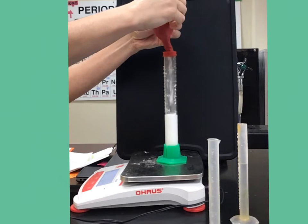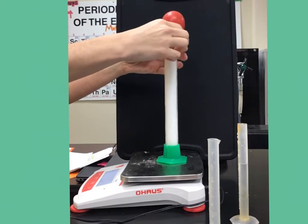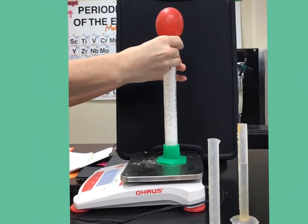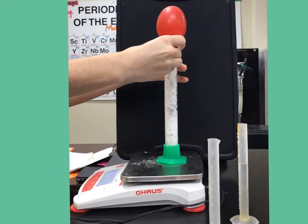Notice that as soon as the baking soda hits the vinegar, it begins to form a gas and bubbles. We can tell that a gas is being produced because it is being trapped inside of the balloon and causing it to expand.